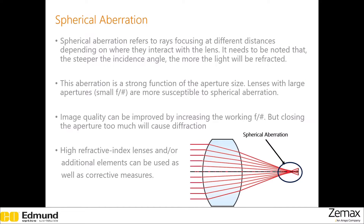The first aberration that we will discuss is spherical aberration. In systems with spherical aberration, rays have different on-axis focus, and this happens due to the curvature of the lens. The larger the angle between the lens surface and the rays, the larger the spherical aberration. It is a very strong function of aperture size, so lenses with low F numbers suffer from it more.